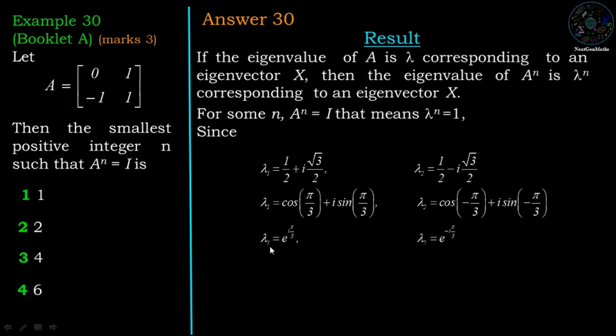Now, find the power of lambda 1 and lambda 2 which will give lambda 1 power n and lambda 2 power n equal to 1. And one can easily say that it is 6. So lambda 1 power 6 is equal to e power i pi by 3 times 6, which is equal to e power i 2 pi. And for lambda 2 it is e power minus i 2 pi. And both have the value 1. Therefore we can say that n equal to 6 will give A power n equal to I.